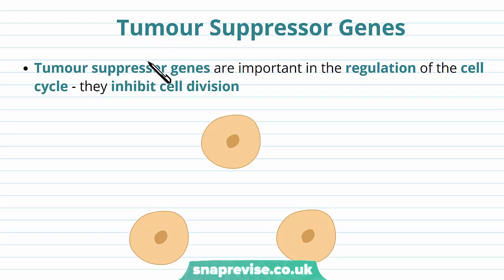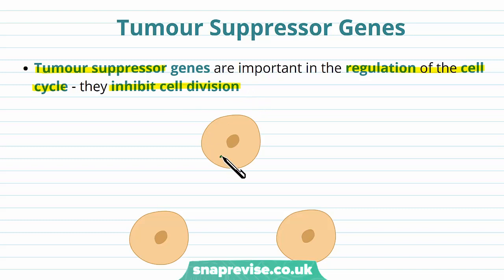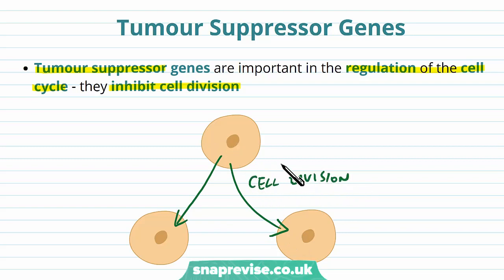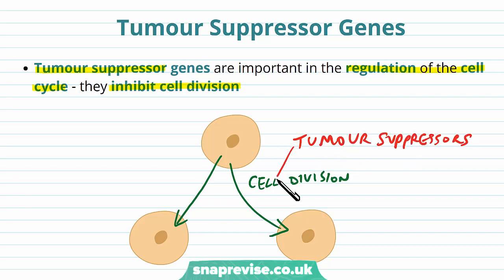There are certain types of genes known as tumour suppressors, and they encode for important products in regulating the cell cycle. They tend to inhibit the cell from going into cell division. Some genes encourage cell division if we need to grow or repair certain tissues, but we also need to control how much this happens. A lot of that control comes from tumour suppressor genes, which inhibit the cell division process. So it's a fine balance between on and off.